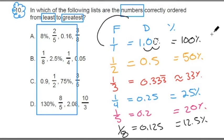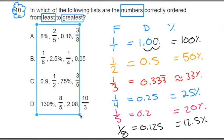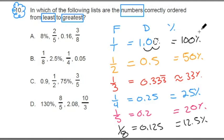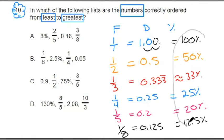Now let's apply this to the problem itself. You don't have to do all the conversions — I'd say you only have to do the first three. When evaluating fractions, decimals, and percents, it's often easier to convert everything into a percent really quickly.